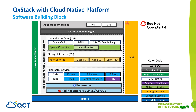The Rook framework acts as a self-storage orchestrator to provide object, block, and file storage as backend storage, which enables the S3-based image registry, persistent volumes, and shared file systems for the containers.